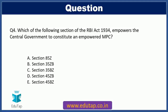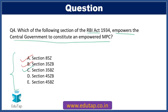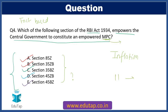Our fourth question: which section of the RBI Act 1934 empowers the central government to constitute an empowered MPC? Option A: Section 85Z. Option B: Section 35ZB. Option C: Section 35BZ. Option D: Section 45ZB. Option E: Section 45BZ. This is a fact-based question from the inflation topic — you must be well-versed with facts as the options are very confusing. MPC stands for Monetary Policy Committee. Do pause, apply your knowledge, and then move on to cross-check.